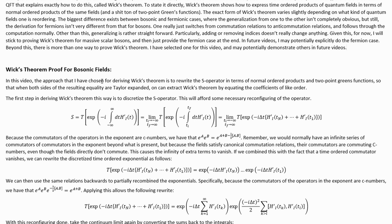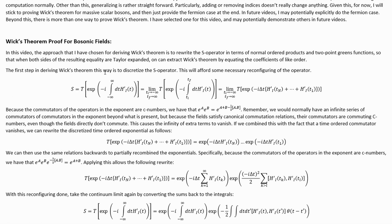In this video, the approach that I have chosen for deriving Wick's theorem is to rewrite the S operator in terms of normal-ordered products and two-point Greens functions, so that when both sides of the resulting equality are Taylor-expanded, one can extract Wick's theorem by equating the coefficients of like order. The first step in deriving Wick's theorem this way is to discretize the S operator.